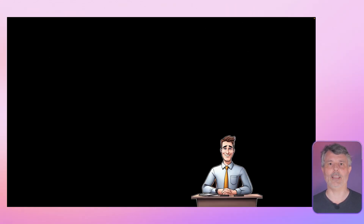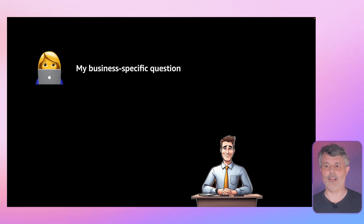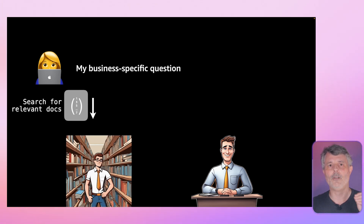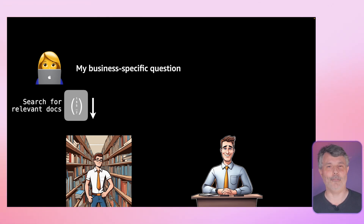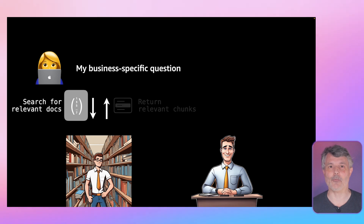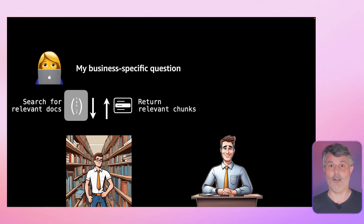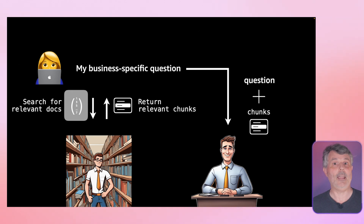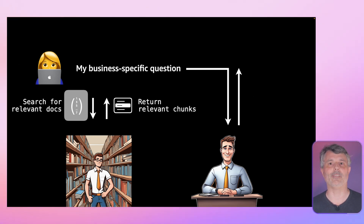Let's see how it works in action. I ask my model a very specific business question. First, we compute a vector from my question and give that vector to the librarian — the database — so that Victor can search for all extracts that talk about that very same subject. It returns all the relevant extracts to the model. We add those chunks to my original question and send the whole set — my question plus the retrieved extracts — to the large language model. The LLM then does what it does best: classify and summarize the text to give a very relevant and precise answer.